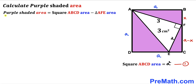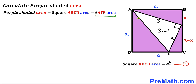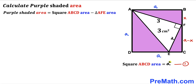Let's make an observation. The purple shaded area equals the area of the whole square ABCD minus the area of the white triangle AFE. We already know the area of the white triangle is 3 cm². So our task now is to calculate the area of square ABCD, which is represented by a². We need to find the value of a².